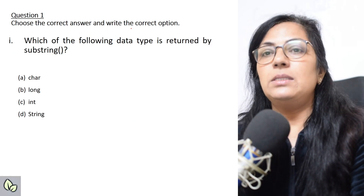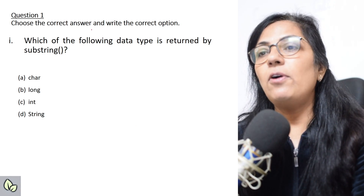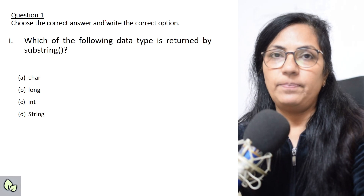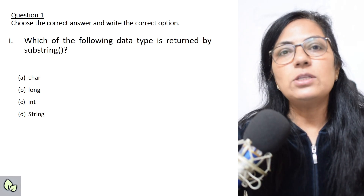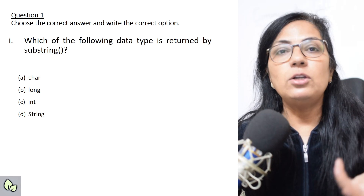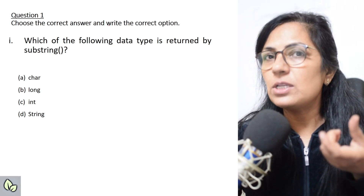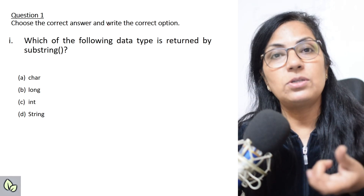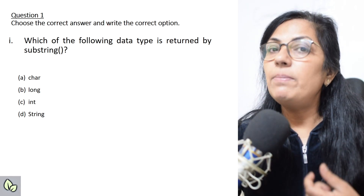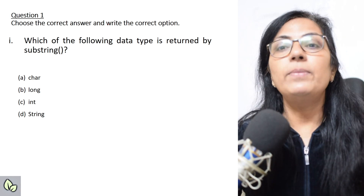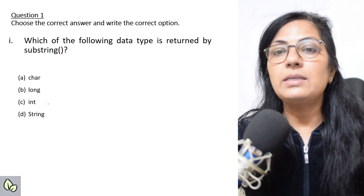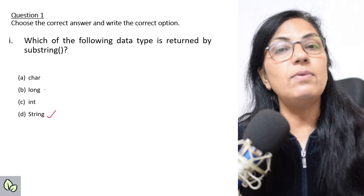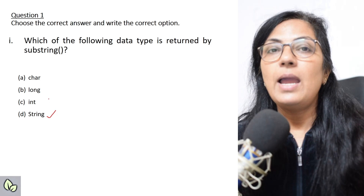The first question says: which of the following data types is returned by the substring function? The substring function is used to extract a part of a string. A part of a string will also be of type string only. So the correct answer for this is String, although char, long, and int are also given as options.